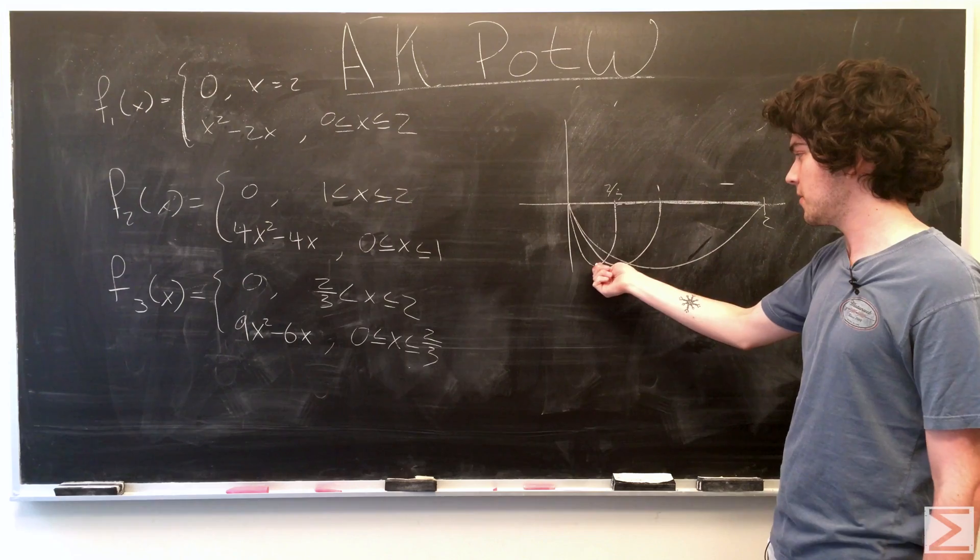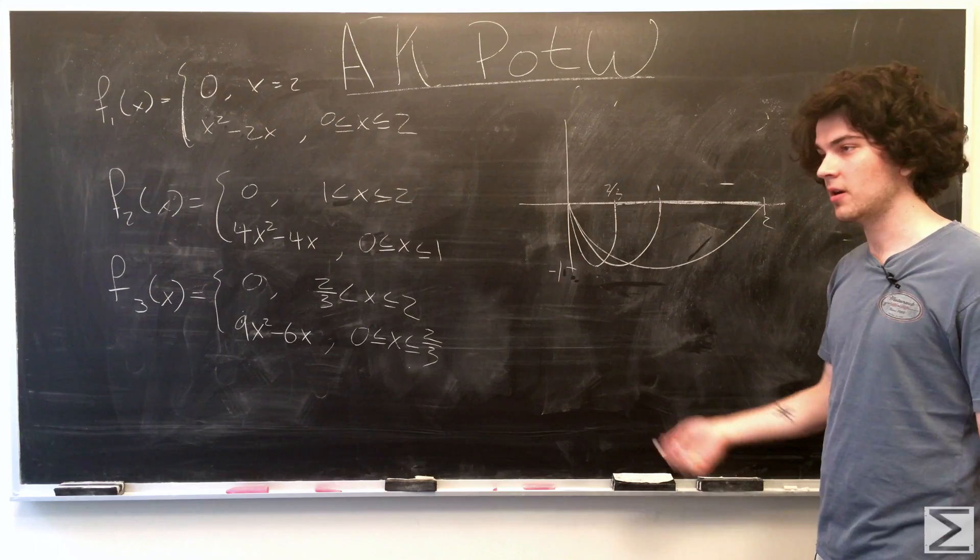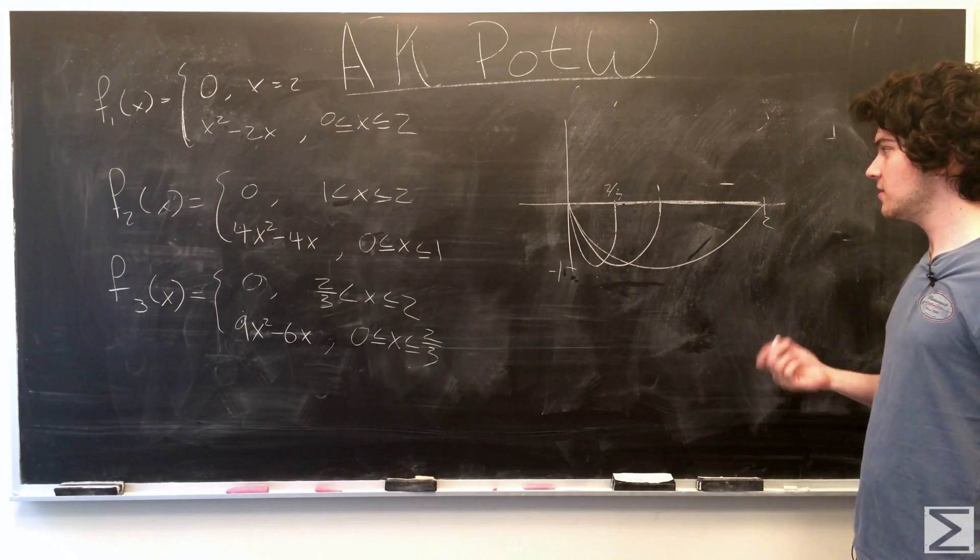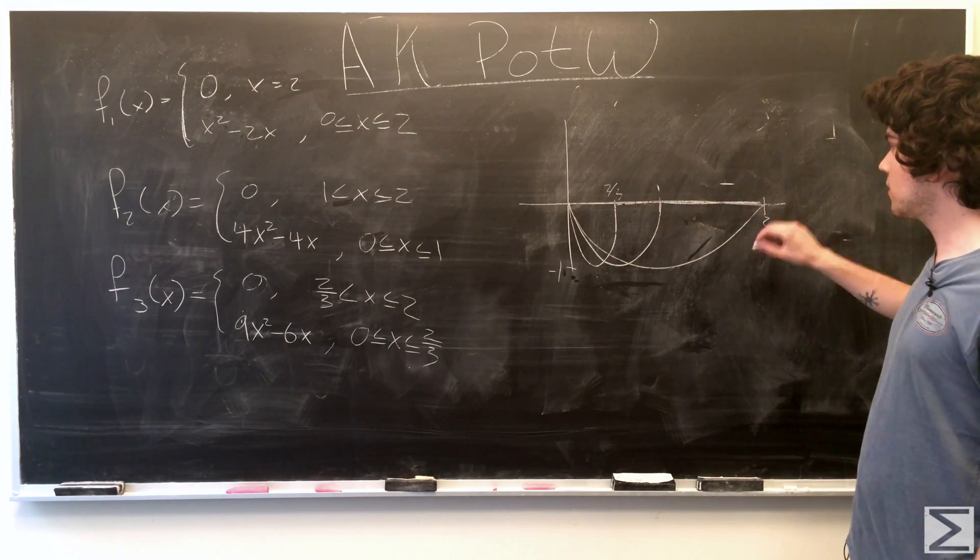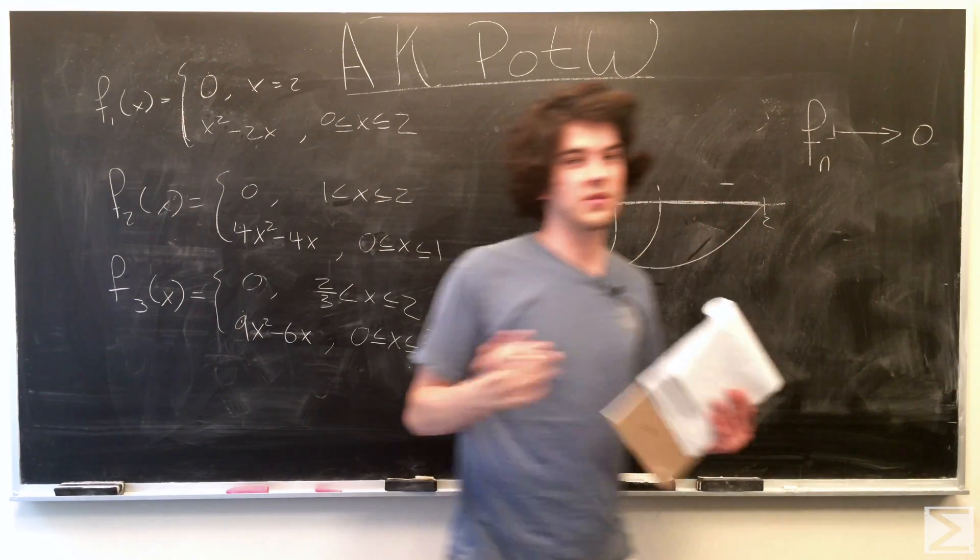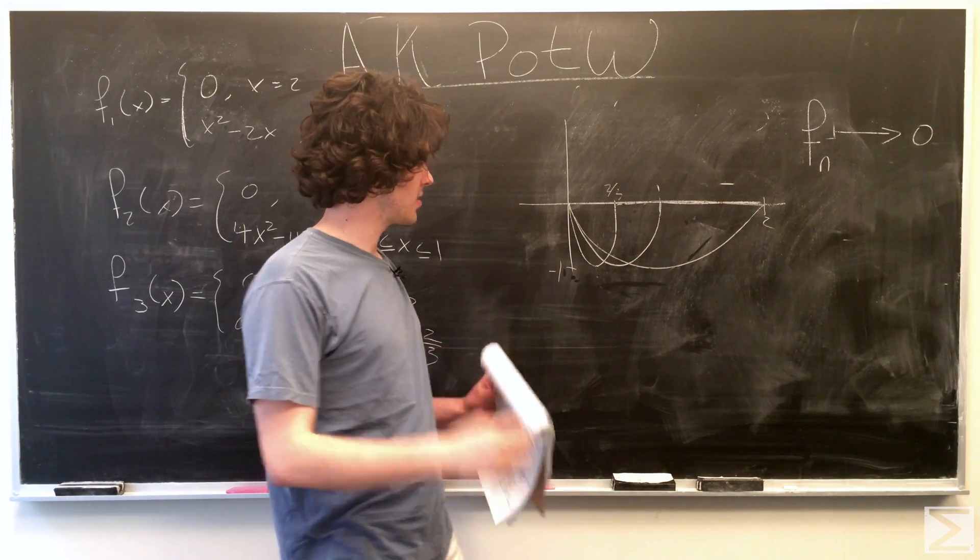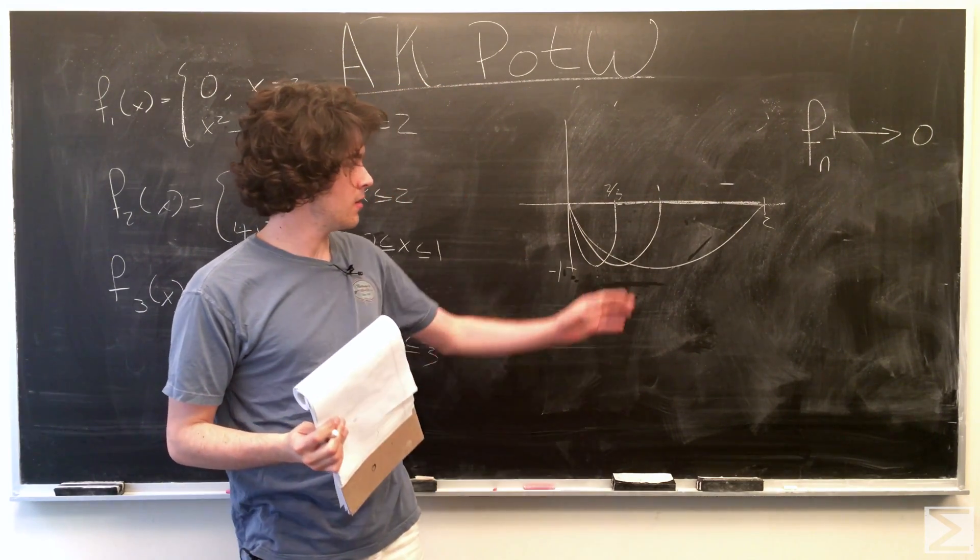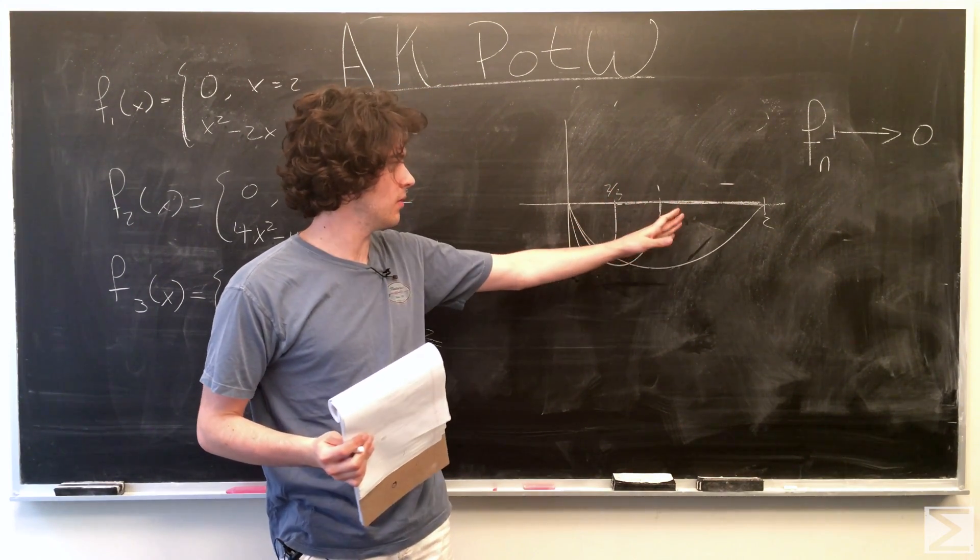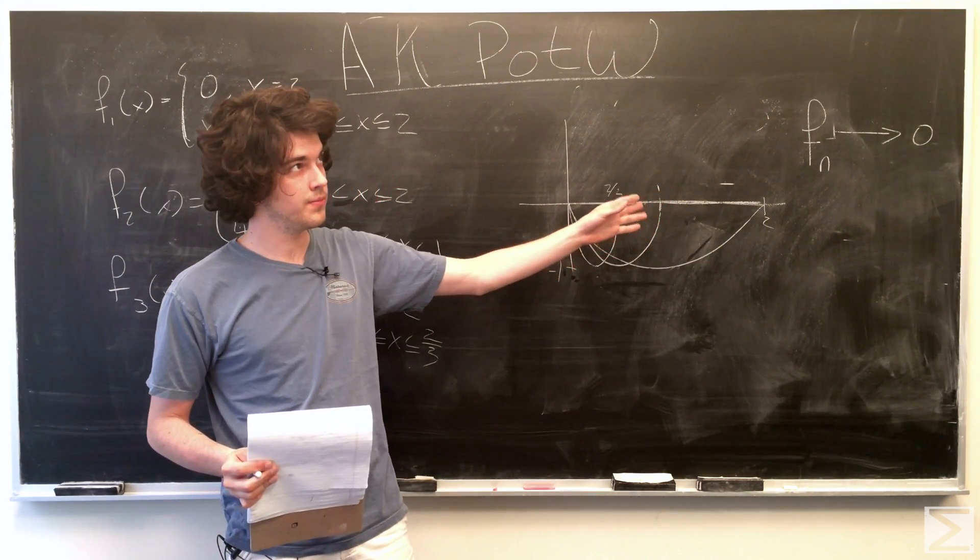However, there's always going to be a point where we have this peak of the parabola because it never actually reaches 0 concretely. So, we can say that pointwise, f of n goes to 0 pointwise. Because for any x on our interval 0 to 2, there is an n where 2 over n equals x. So, we just choose a 2 over n that's greater than there, that falls between 2 over n and 2.